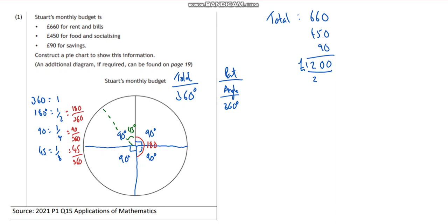That means for his rent and his food and his savings, he's spending 660 out of that amount. For his food, he's spending 450 out of that amount. And for his savings, he's spending 90 out of that amount.